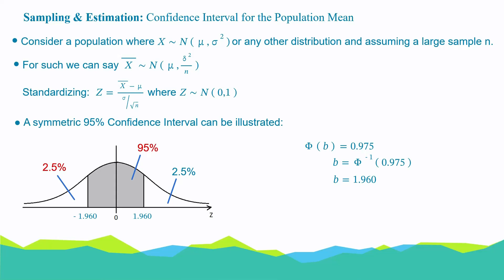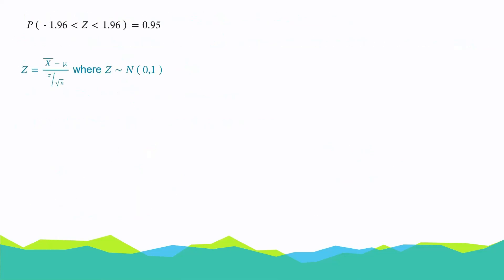So, we are saying that the probability that z lies between minus 1.96 and positive 1.96 is 0.95. Since z is equal to x bar minus mu over sigma over root n, we can write this as the probability that (x bar minus mu) over (sigma over root n) lies between minus 1.96 and 1.96, and that's equal to 0.95.